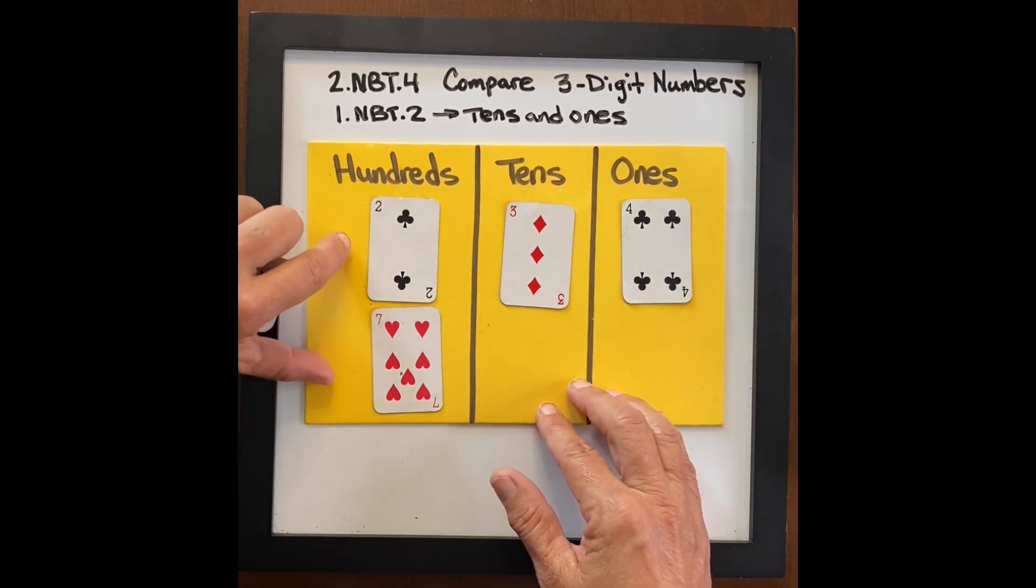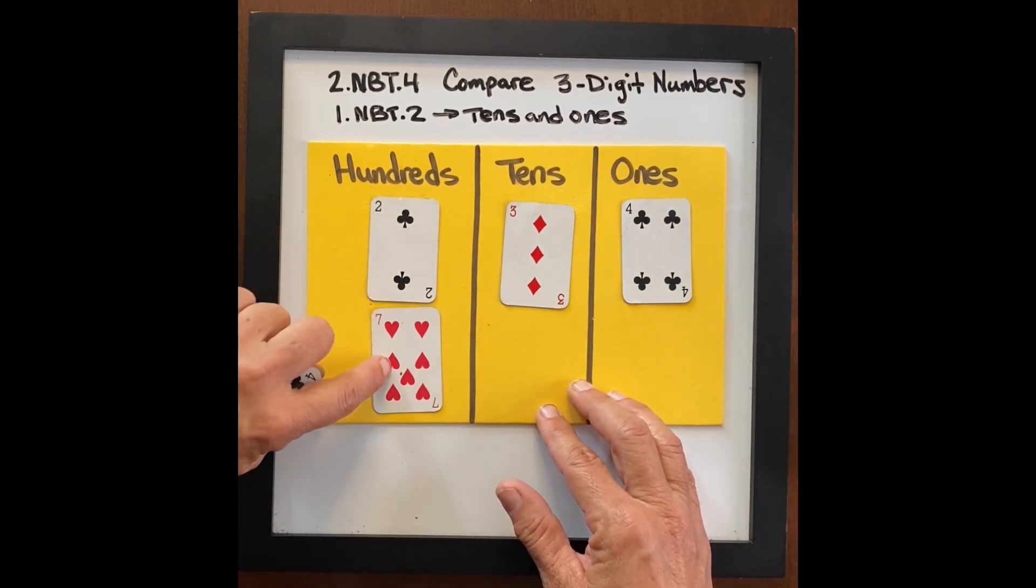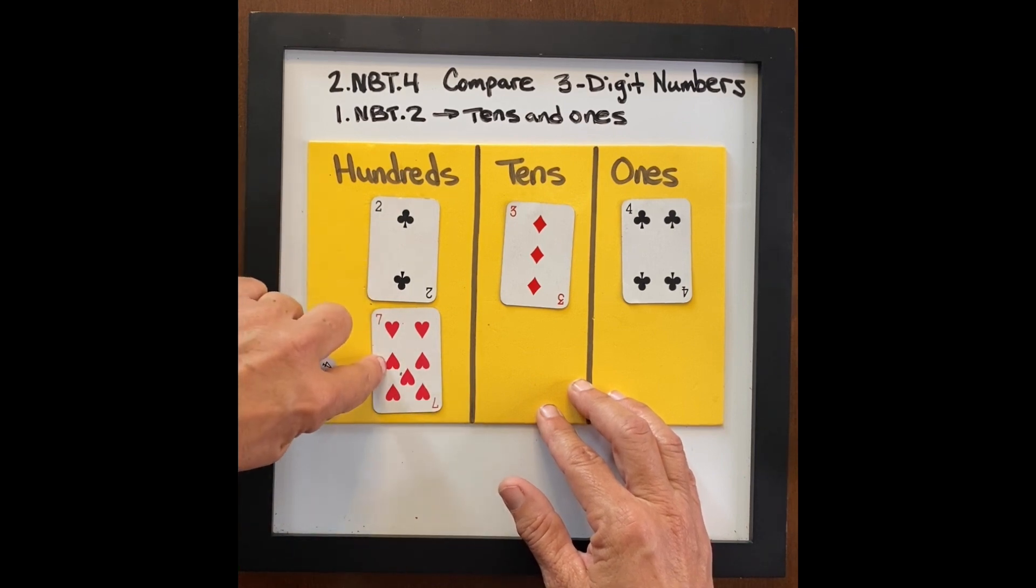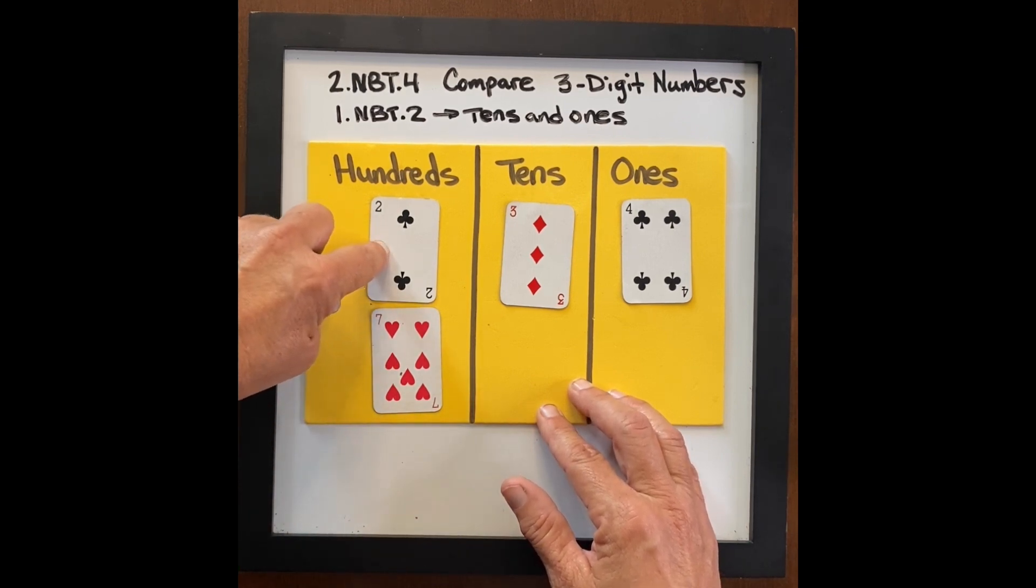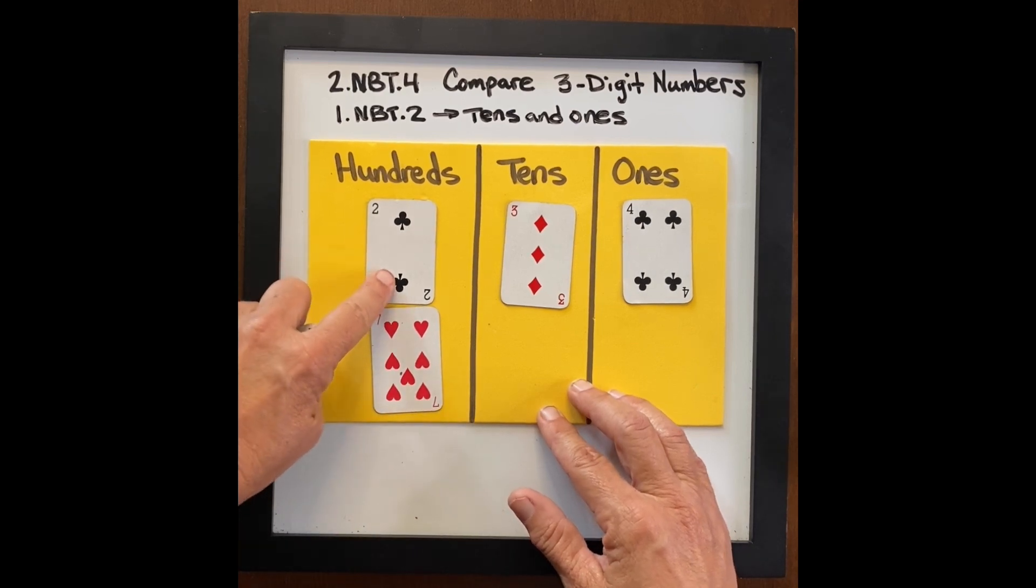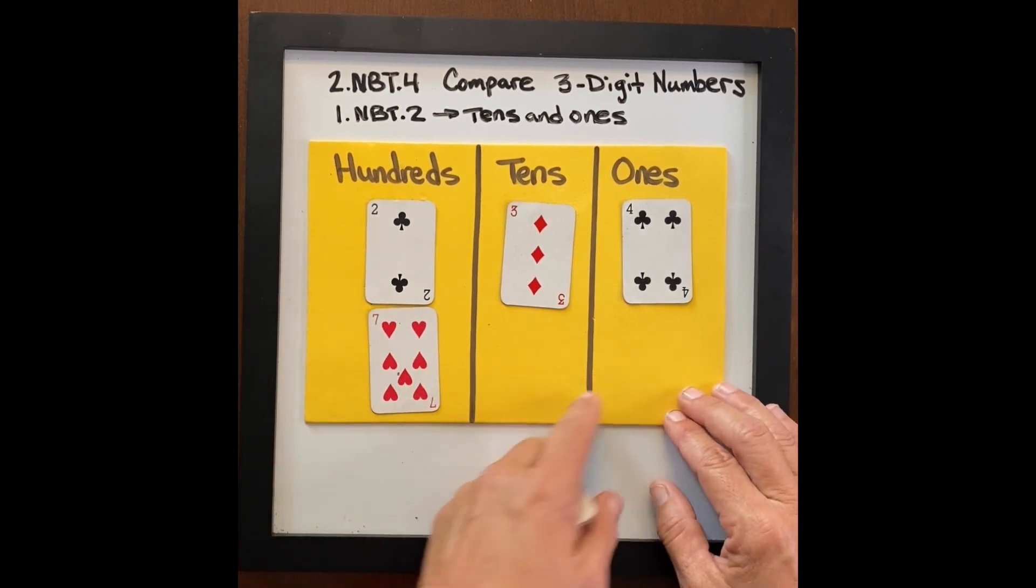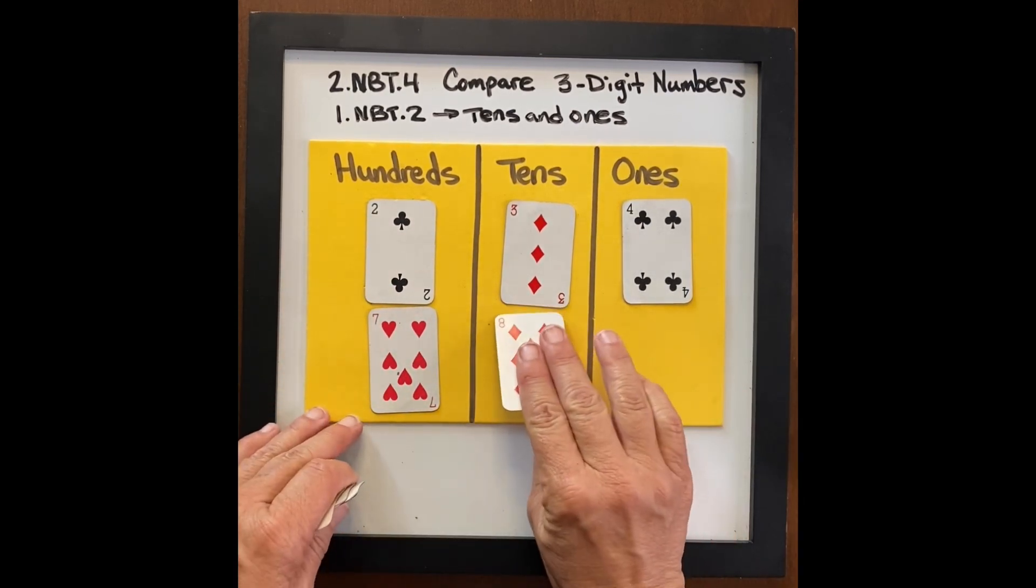And the conversation here is going to lend itself to, well, seven hundred is seven hundred and two hundred is two hundred. Seven hundred is a greater number than two hundred. So this number is going to be bigger. But let's go ahead and continue it.